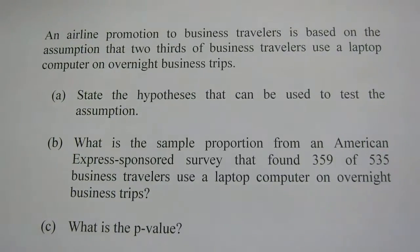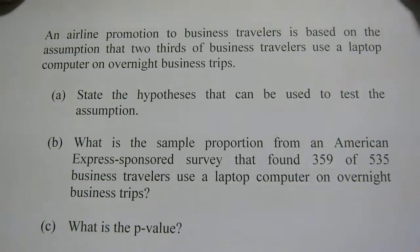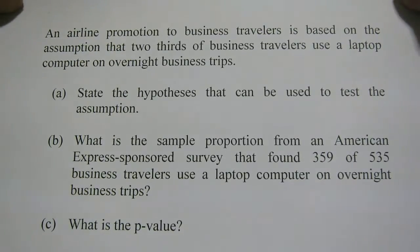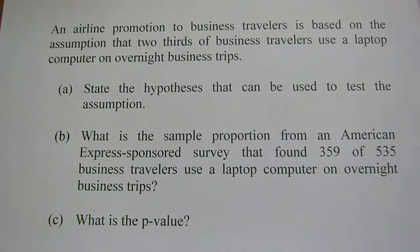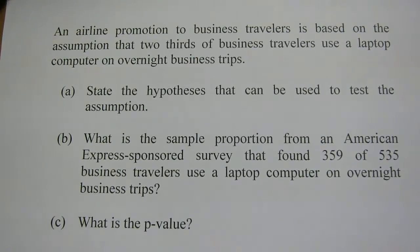This is a quick outline of how to answer a hypothesis testing question using proportions. An airline promotion to business travellers is based on the assumption that two-thirds of business travellers use a laptop computer on overnight business trips. Part A: state the hypotheses that can be used to test the assumption. Part B: what is the sample proportion from an American Express-sponsored survey?